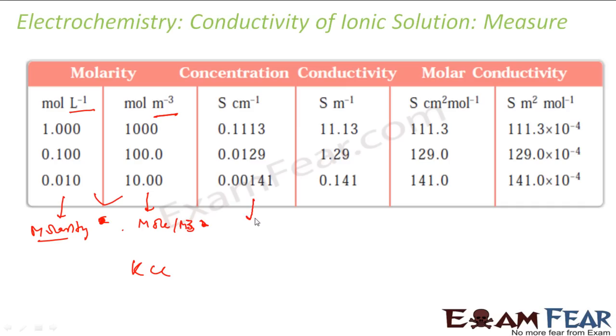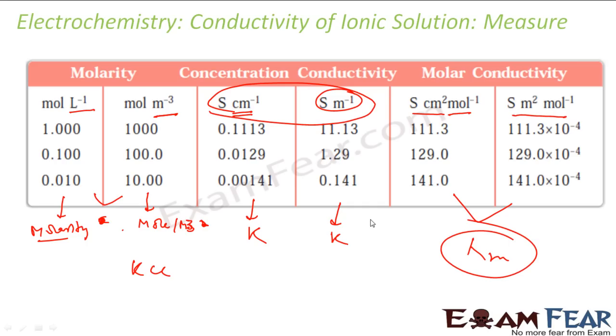And this is my K - K was in siemens per centimeter, this is also K in siemens per meter. These two are my K, and this is my molar conductivity in siemens centimeter square per mole, and this is siemens meter square per mole. So these are two values of my lambda.